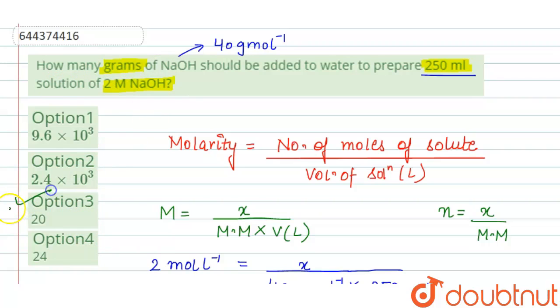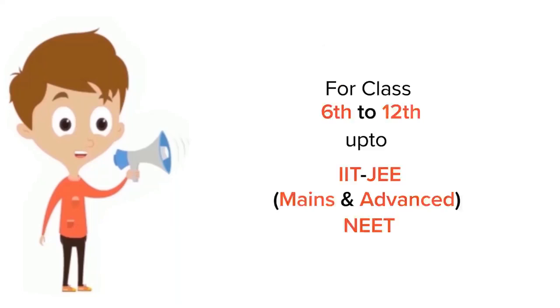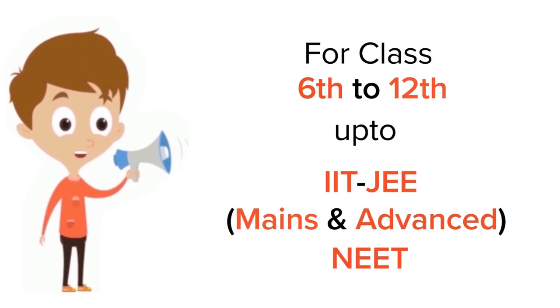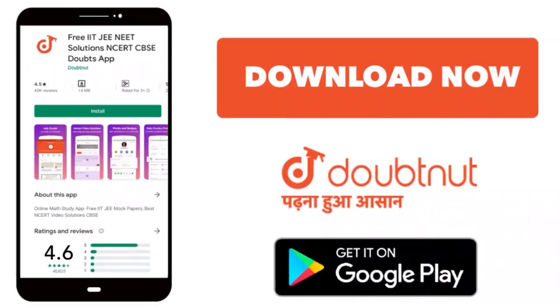Our correct option will be option 3. For class 6 to 12, IIT-JEE and NEET level, trusted by more than 5 crore students. Download Doubtnet app today.